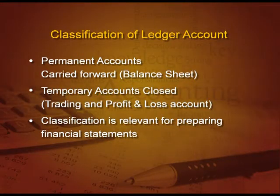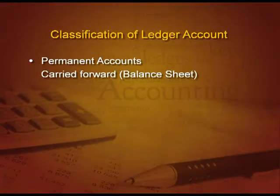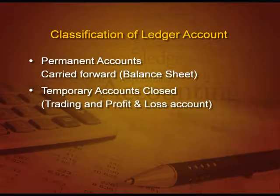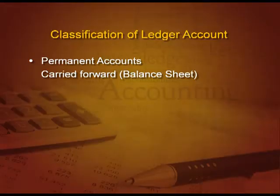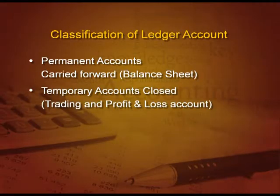Now let us classify the ledger accounts. There are two types of accounts: permanent accounts and temporary accounts. Permanent accounts are those which are carried forward in the balance sheet for the next period, whereas temporary accounts are those which are closed either in trading account or in profit and loss account. For example, furniture and building are carried forward to the next year, so these are permanent accounts, whereas wages, salary, and office expenses are temporary accounts.